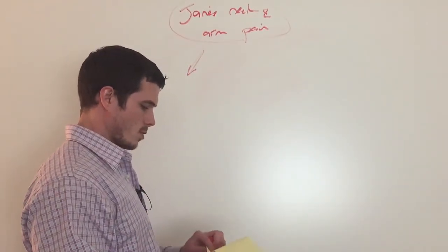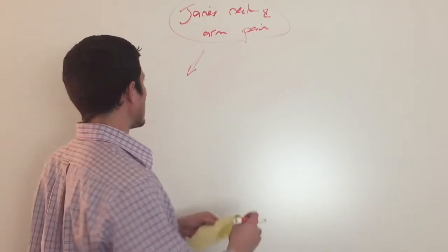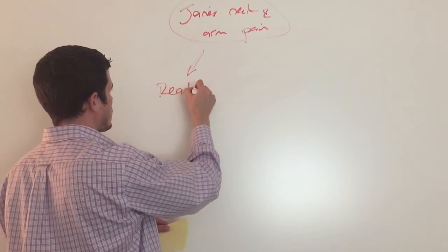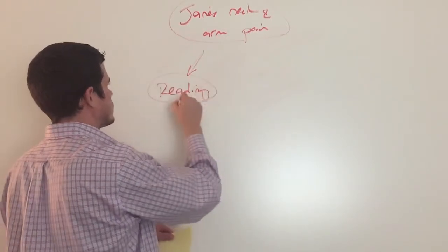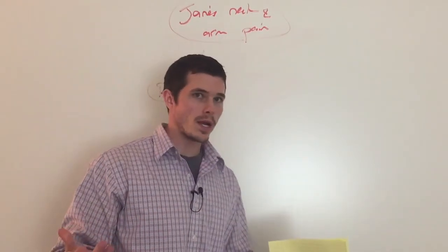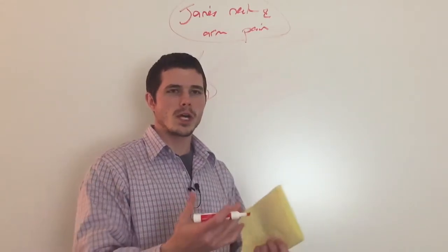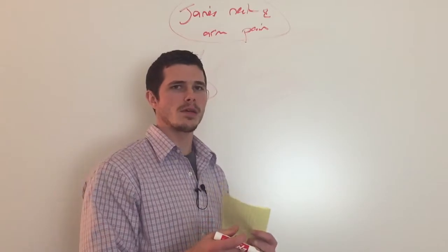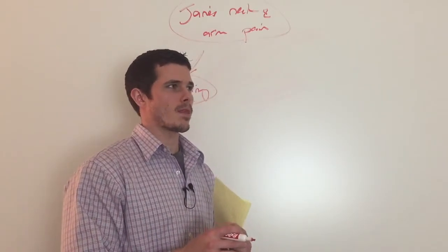First things first, you're going to create main branches from this Trouble Tree. In this example, the first thing she said was reading. And I said, very open-ended question, I said, well, tell me more. So what about reading seems to bother your neck and arm pain?